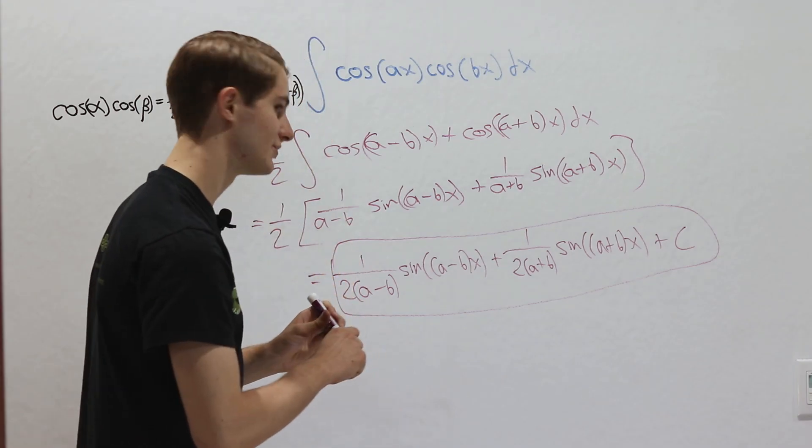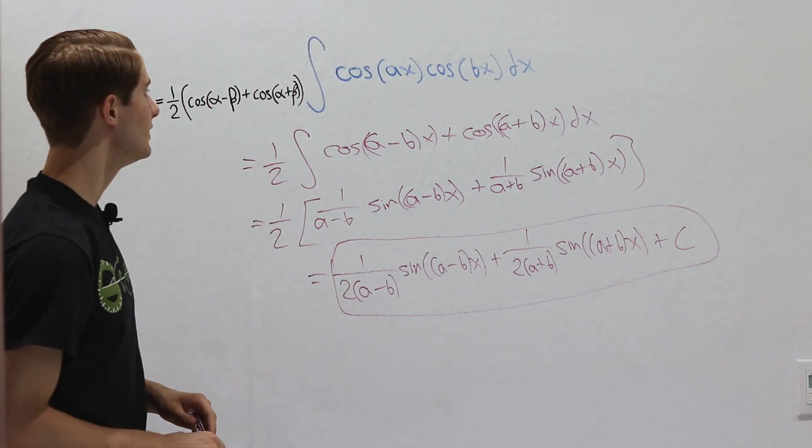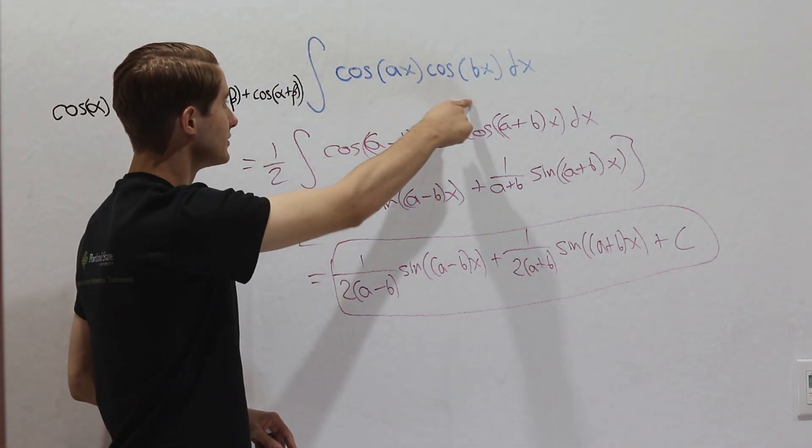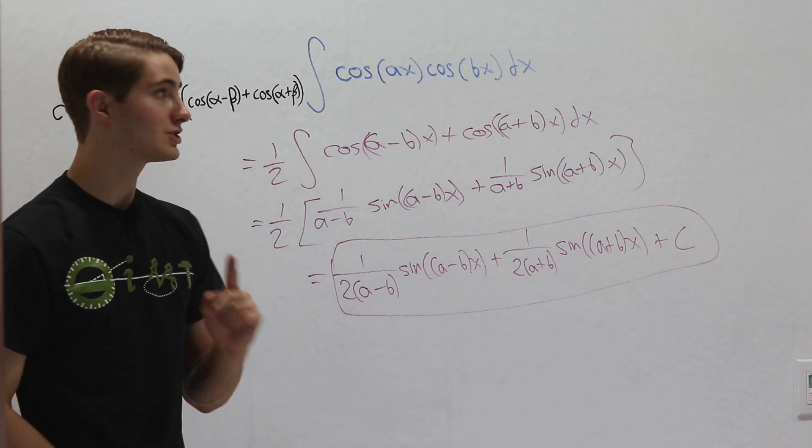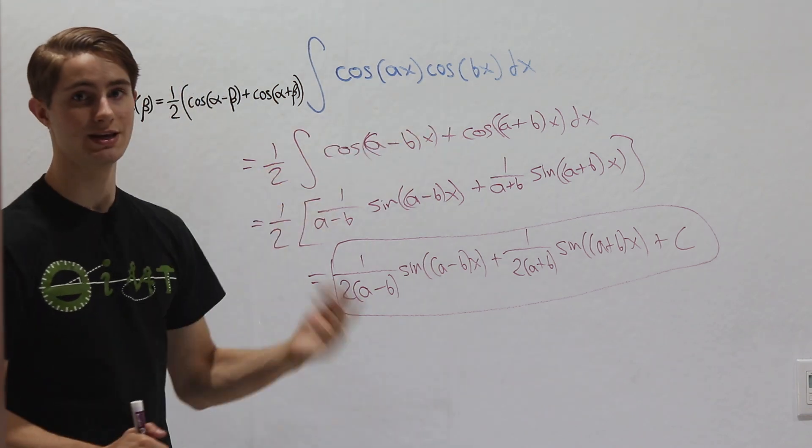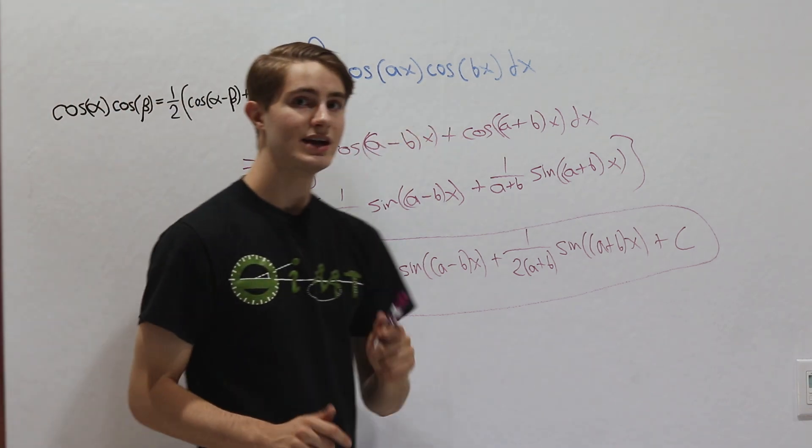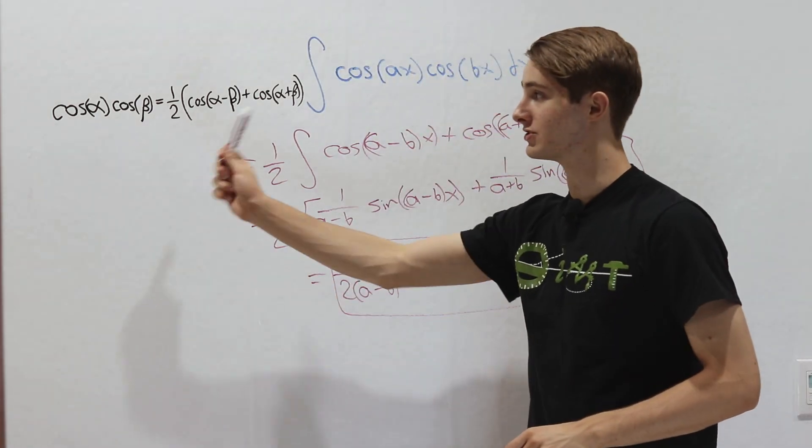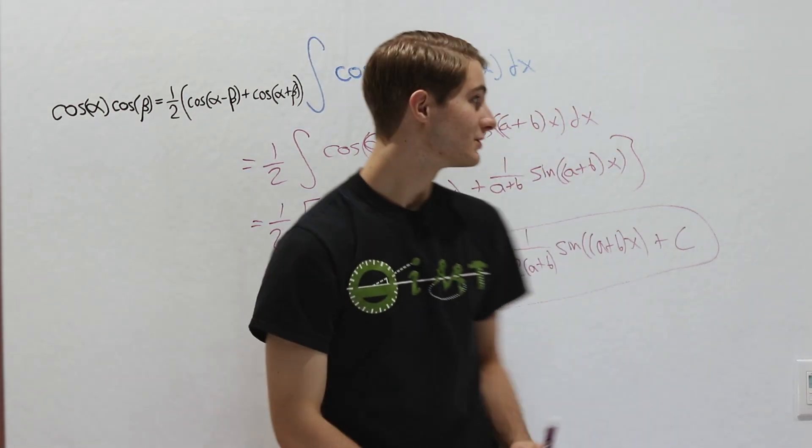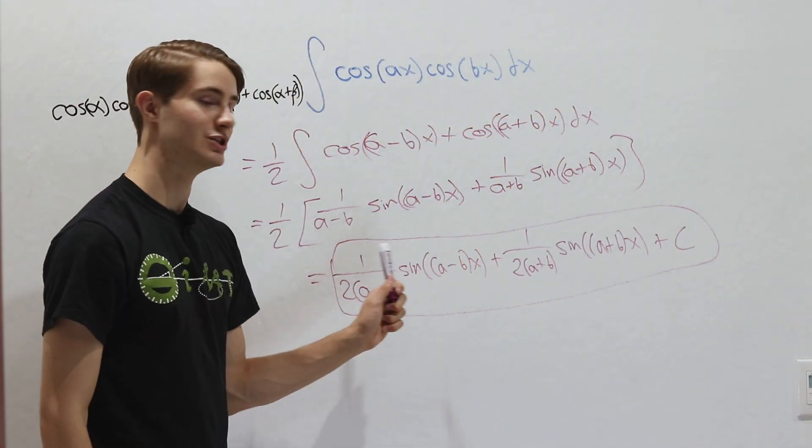And that is our final answer. So any time you see an integral where you have the product of two trig functions, especially when the input is different so you can't use a u substitution, then you want to start looking at those product to sum identities so that you can simplify your integral down and integrate just like this.